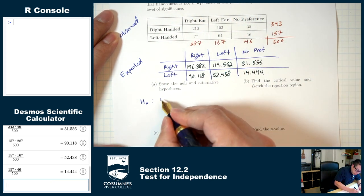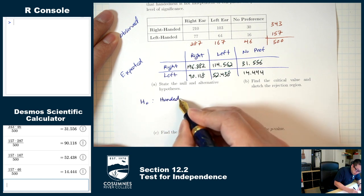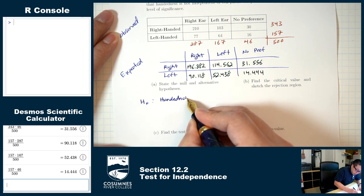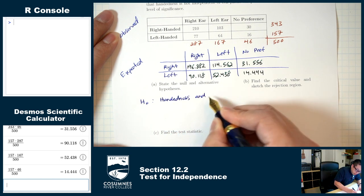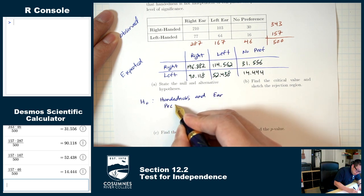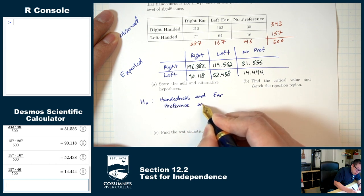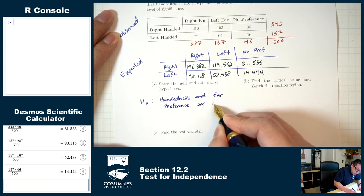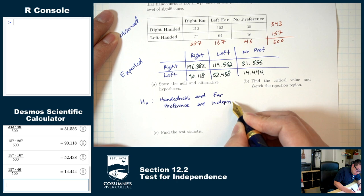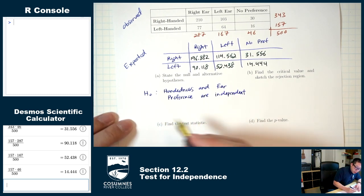H0 states that handedness and ear preference are independent. H1 states that they are not independent.